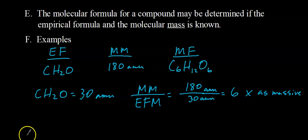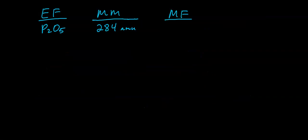Let's try another one — be sure to show all your work. The empirical formula is P₂O₅ and the molecular mass is 284 AMU. The empirical formula mass is 142 AMU. Dividing 284 by 142 gives us 2, which tells us the molecular formula is twice the empirical formula. So we get P₄O₁₀.